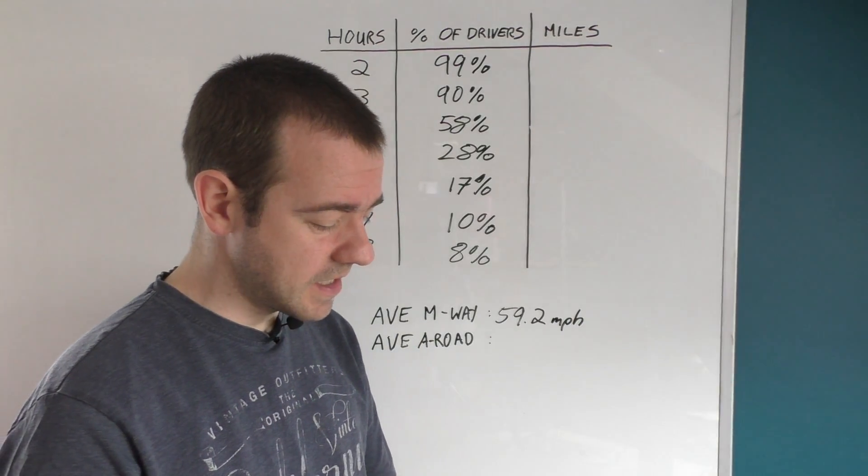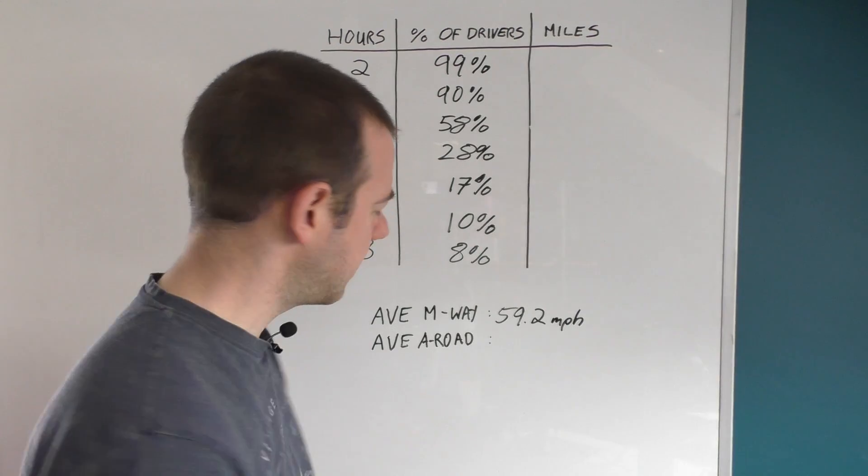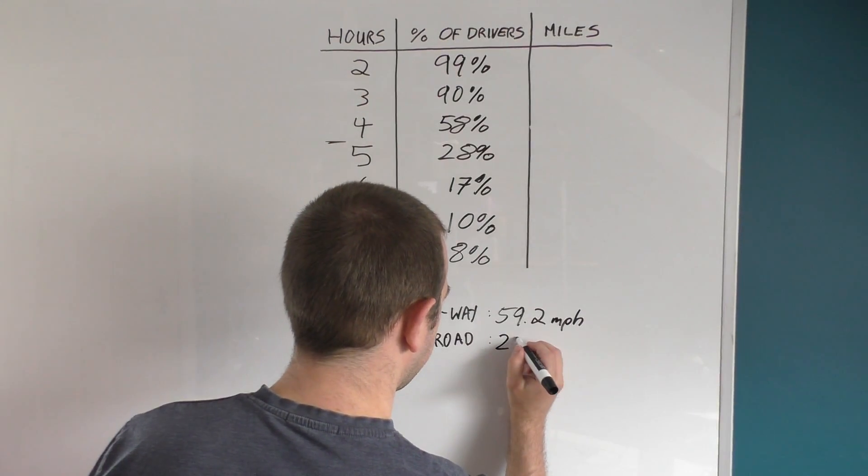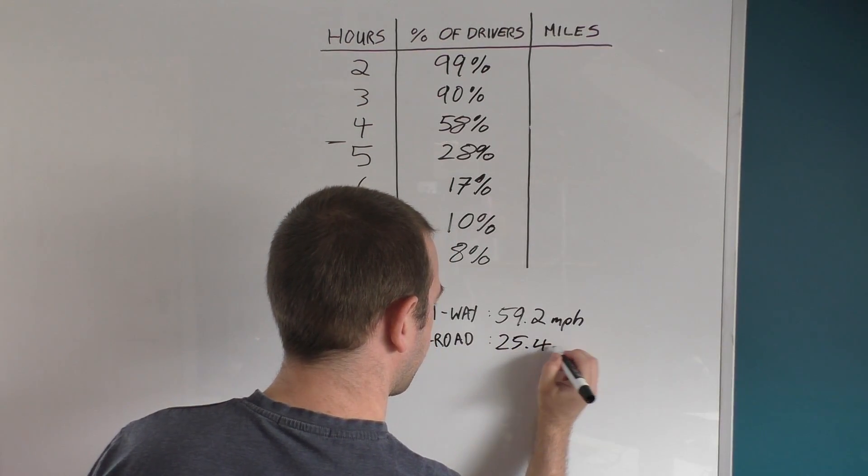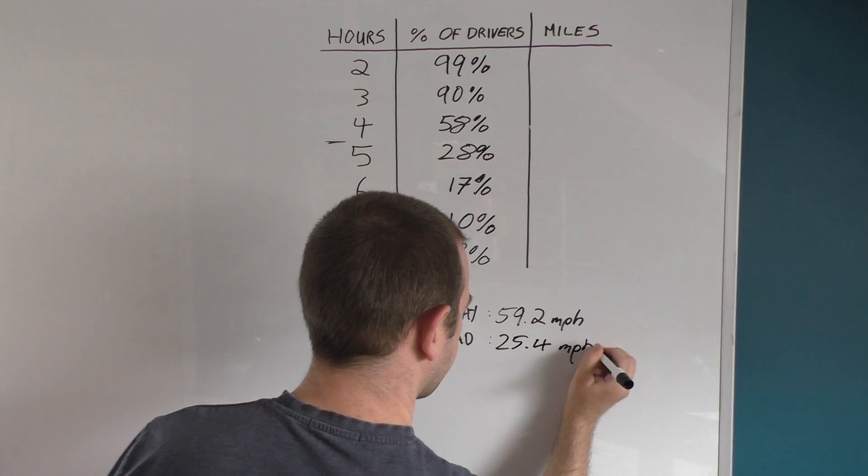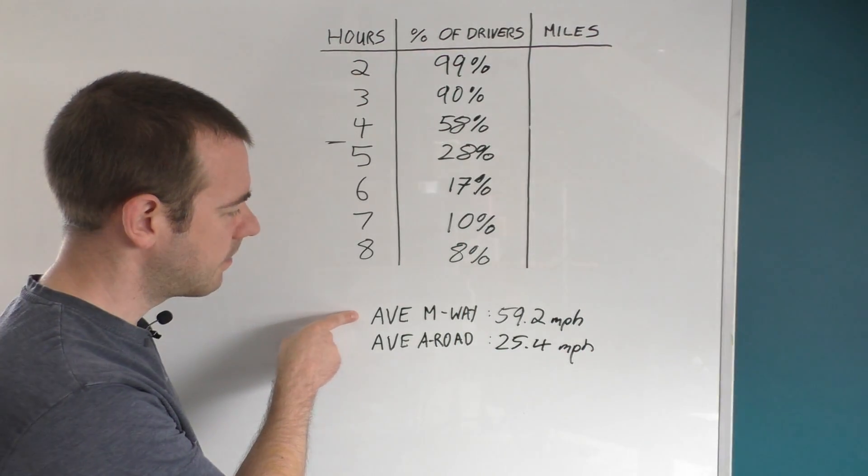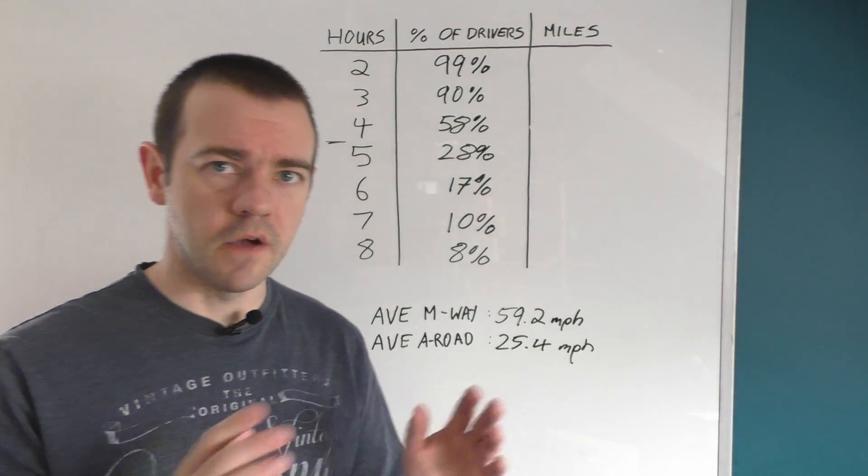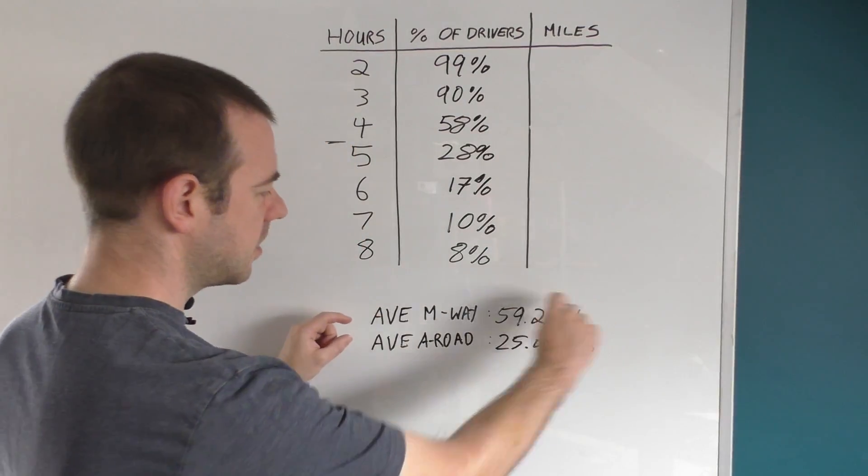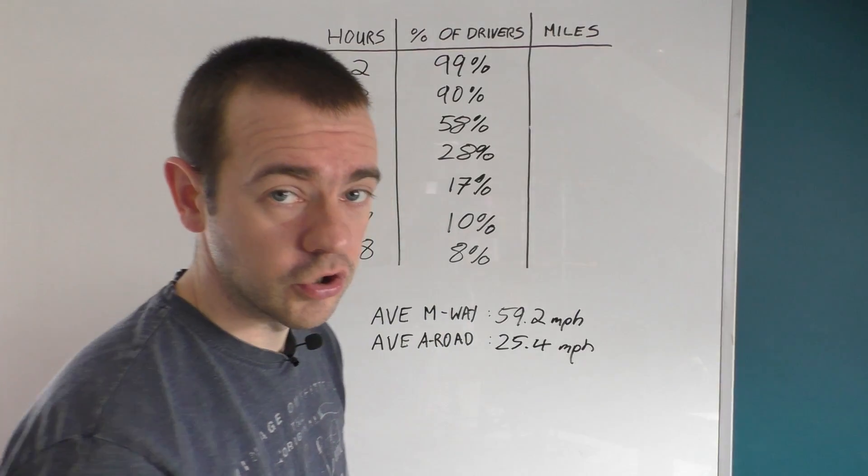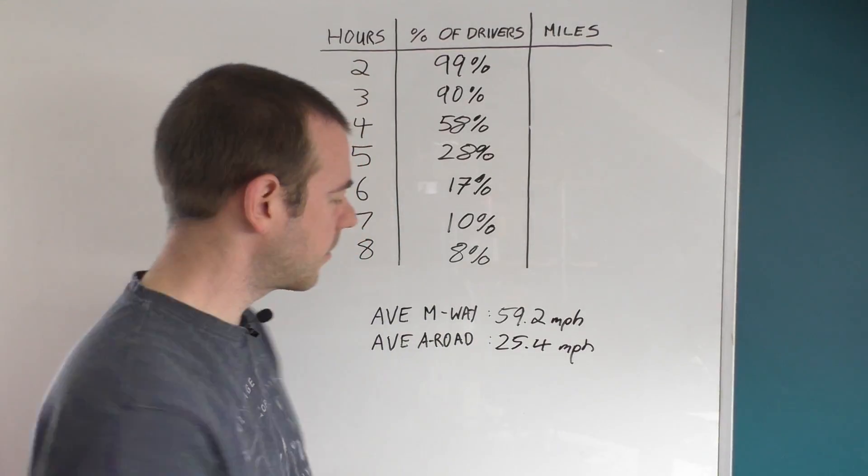For all the other A roads, so this is I guess all other roads other than residential streets, things like that, the average speed is just a paltry 25.4 miles per hour. Now the strategic road network carries about a third of all traffic but only accounts for about two percent of all roads, but that is what you will traditionally be using if you're doing a long journey, so that's what I'm going to mainly go off.